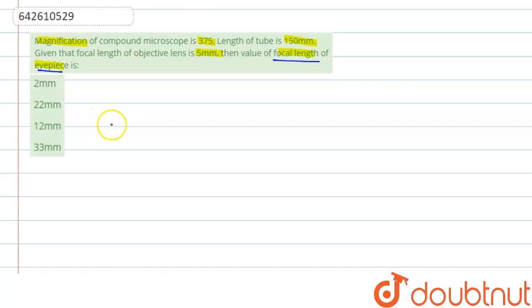The formula for compound microscope: the magnification is equal to the length of the tube divided by the focal length of the objective, into 1 plus d divided by focal length of the eyepiece.